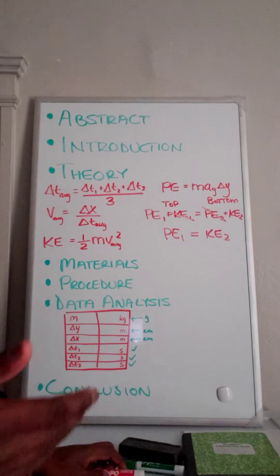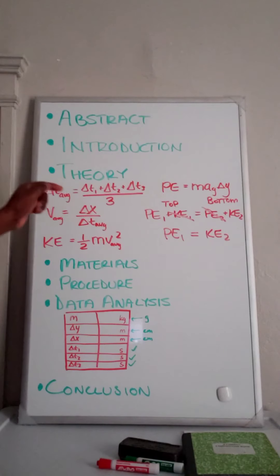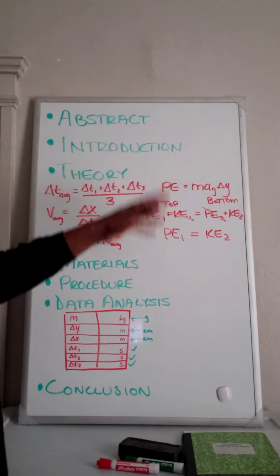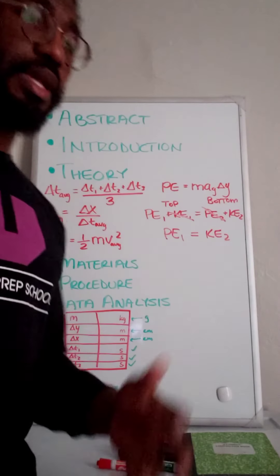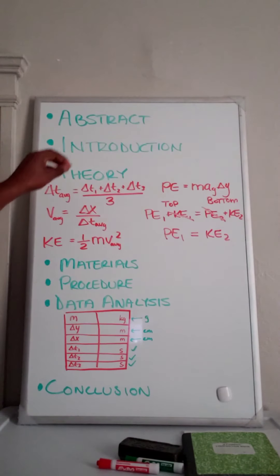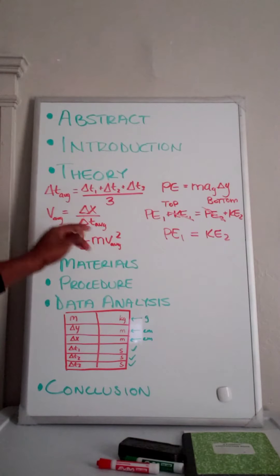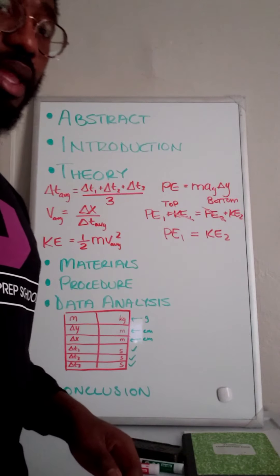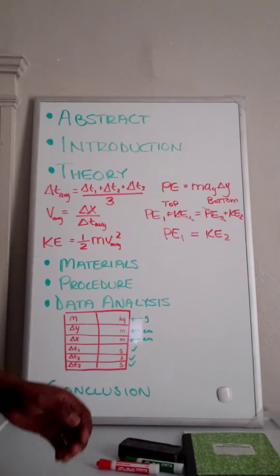So again, in this theory section you want to write down the names of each of these equations: average time, average velocity, kinetic energy, potential energy, conservation of energy. And you want to explain how you are going to use each of these five equations.